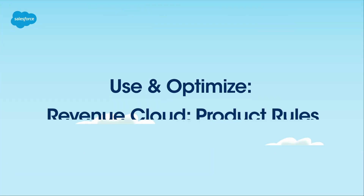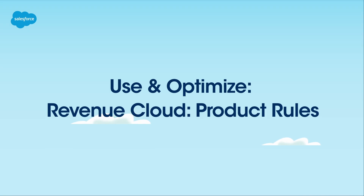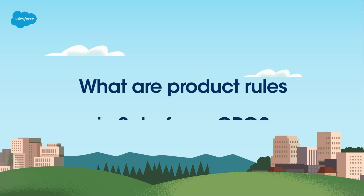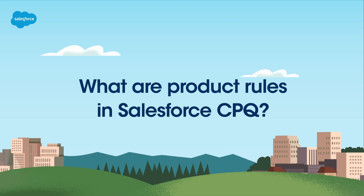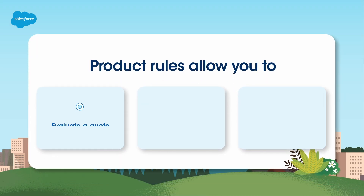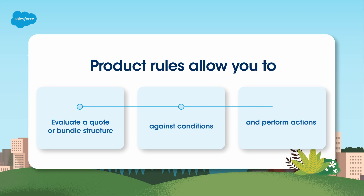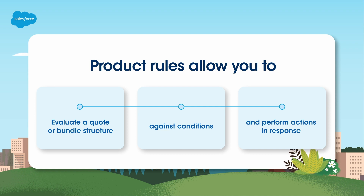In this video you'll learn how to use and optimize product rules for Salesforce CPQ, whether you're just getting started or looking to fine-tune your CPQ process. Product rules allow you to evaluate a quote or bundle structure against conditions and perform actions in response — they're like your guiding hand ensuring that your quotes and bundles are accurate and aligned with your business requirements.